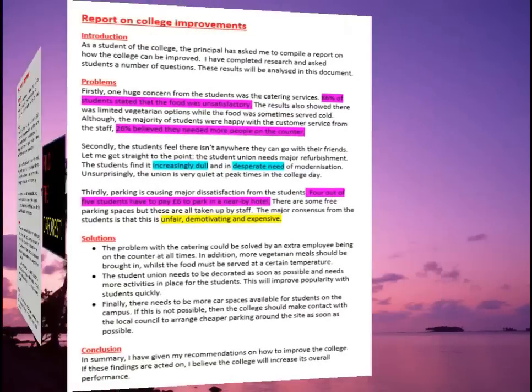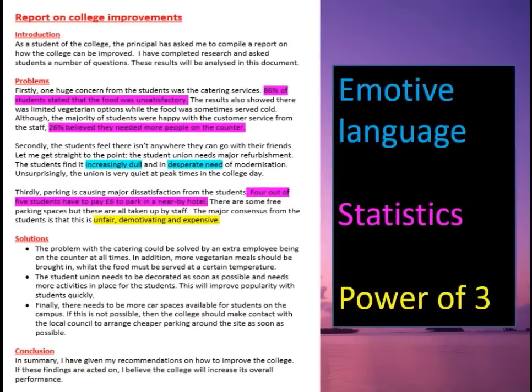Looking back at the report — unlike a speech or review, there isn't actually much FOREST in this example because in those formats it's more appropriate to use all the stylistic devices. Here we're not going to use too much. Emotive language: only 'increasingly dull' and 'desperate need.' Statistics and facts: '86% of students stated the food was unsatisfactory', '26% believed they needed more people on the counter', 'four out of five students had to pay £6' — and stating I was asked to do this report by the principal is also a fact. Rule of three: just once — 'unfair, demotivating and expensive.'